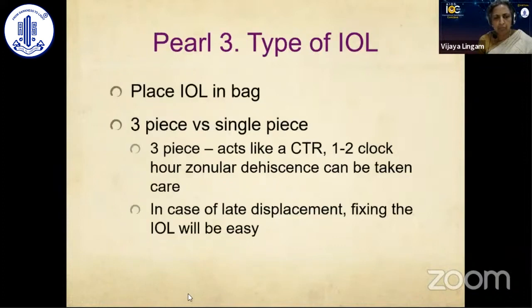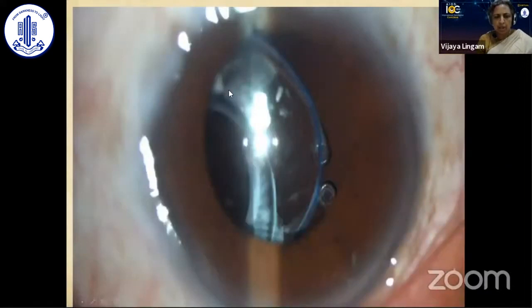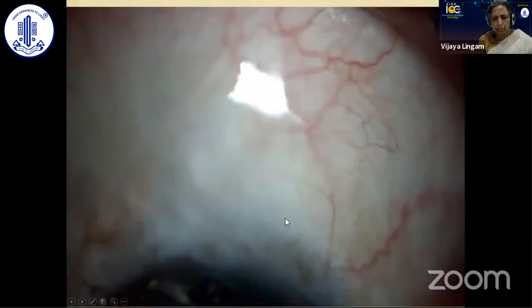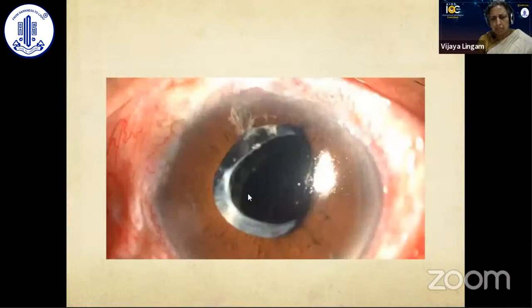Place the IOL in the bag. Regarding IOL type — single-piece or three-piece — a single-piece IOL is advisable if the bag is stable. If the bag is not stable, a three-piece lens is preferable because it acts like a CTR and can manage one to two clock hours of zonular loss. In cases of late displacement of the IOL with the bag, fixing the IOL is easier with a three-piece lens. For example, a displaced three-piece lens bag can be fixated with a single scleral suture, yielding a stable result that persists over time.